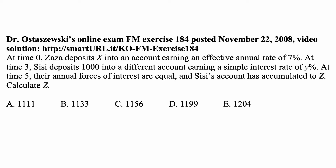At time 0, Zaza deposits X into an account earning an effective annual rate of 7%. At time 3, CC deposits 1,000 into a different account earning a simple interest rate of Y%. At time 5, their annual forces of interest are equal and CC's account is accumulated to Z. Calculate Z.